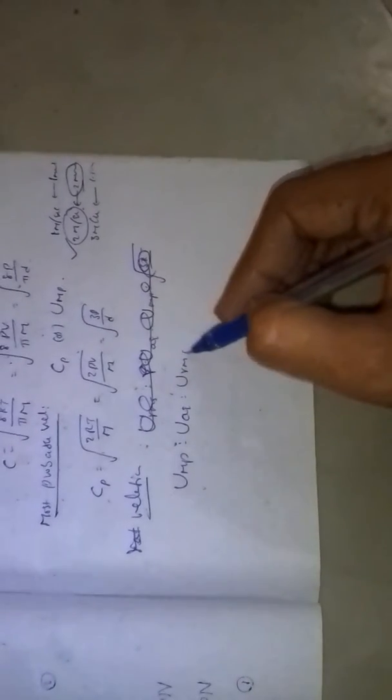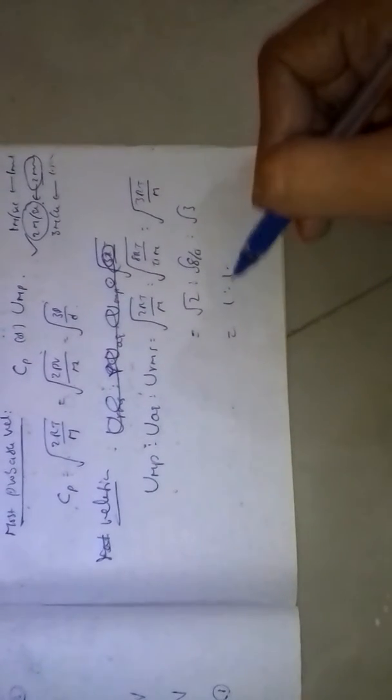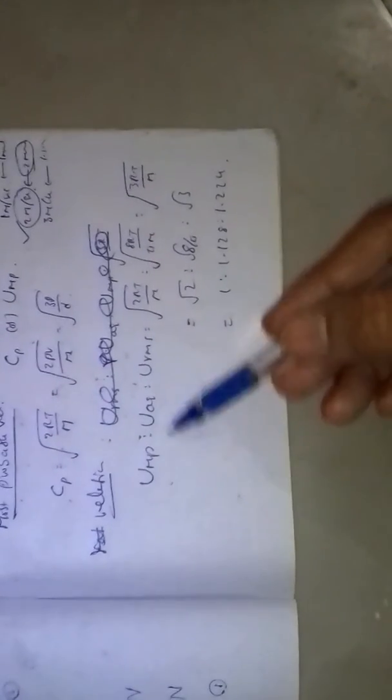The relation between the three molecular velocities: most probable velocity Cp equals root of 2RT by M; average velocity C-bar equals root of 8RT by pi M; and RMS velocity equals root of 3RT by M. Cancelling RT by M, the ratio is root 2 : root(8/pi) : root 3, which simplifies to 1 : 1.128 : 1.224, giving the relation between most probable, average, and RMS velocities.